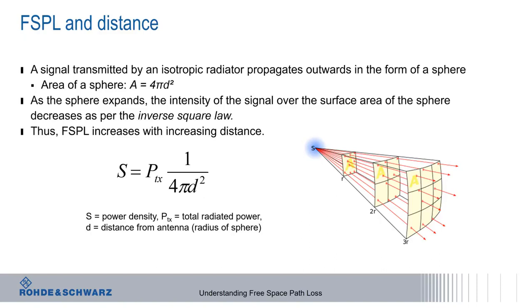p sub tx is the total radiated or transmit power, d is the distance from the antenna, that is, the radius of the sphere. Again, it should be fairly easy to see why path loss increases as distance from the transmitter increases.